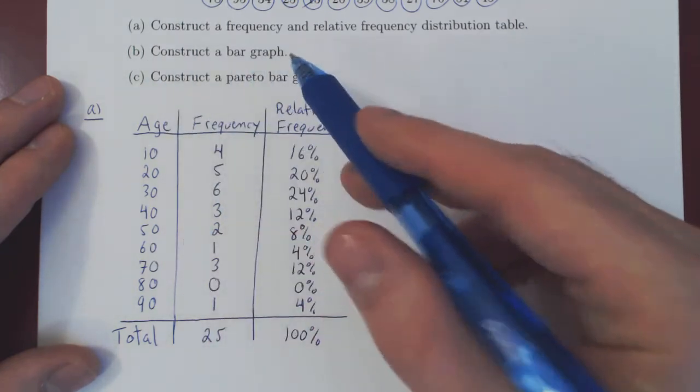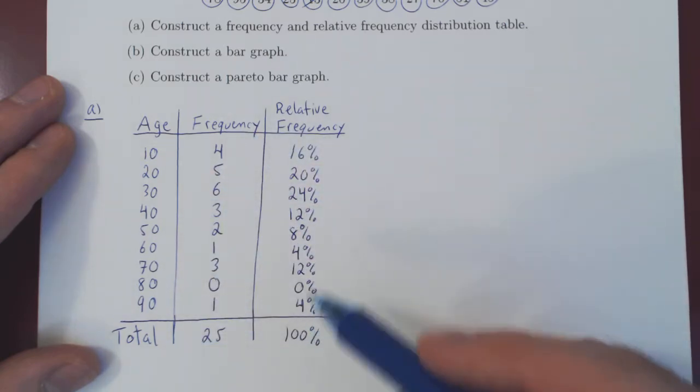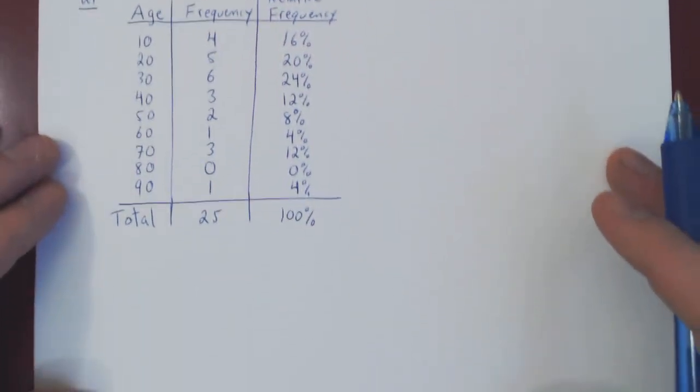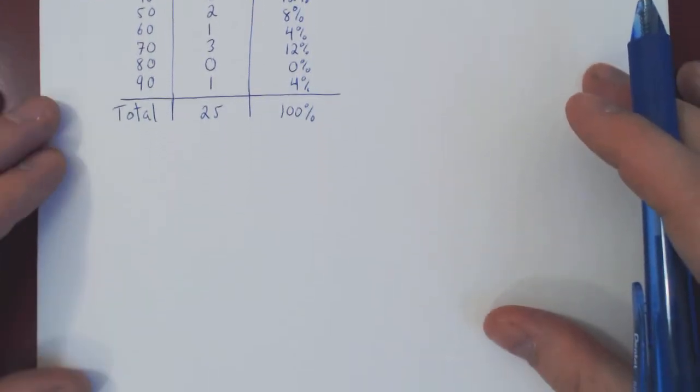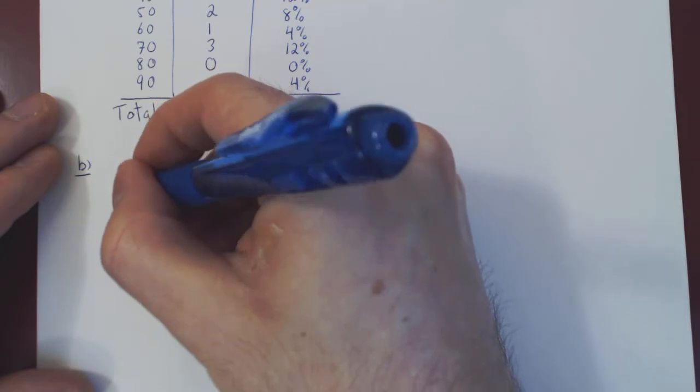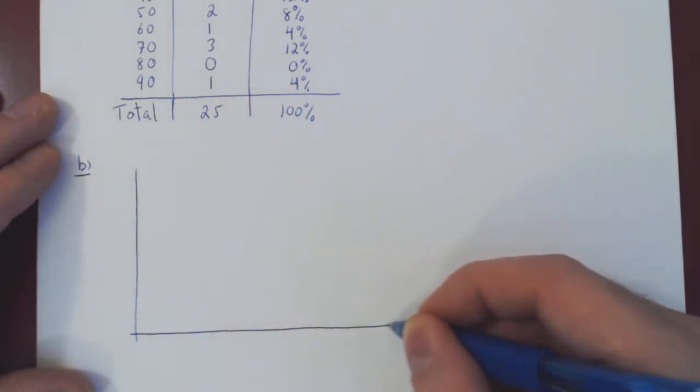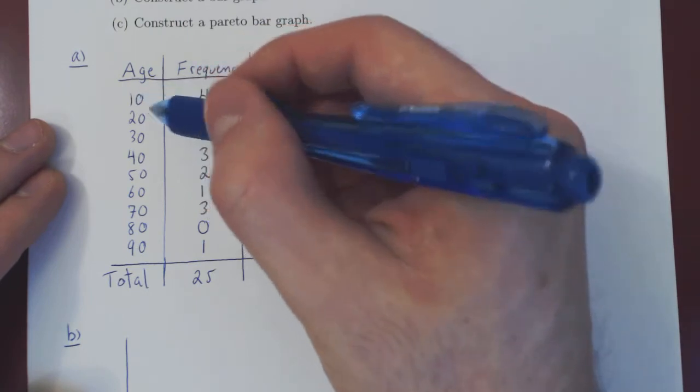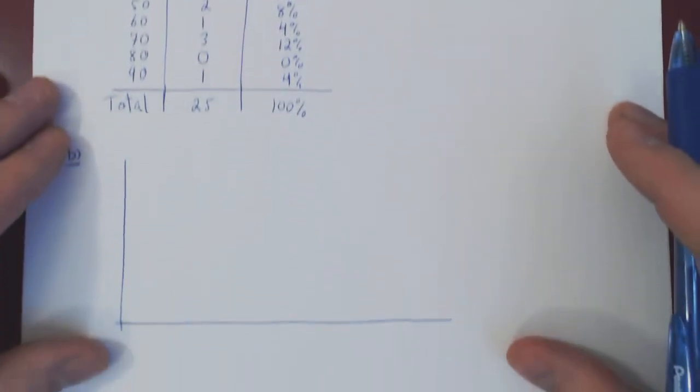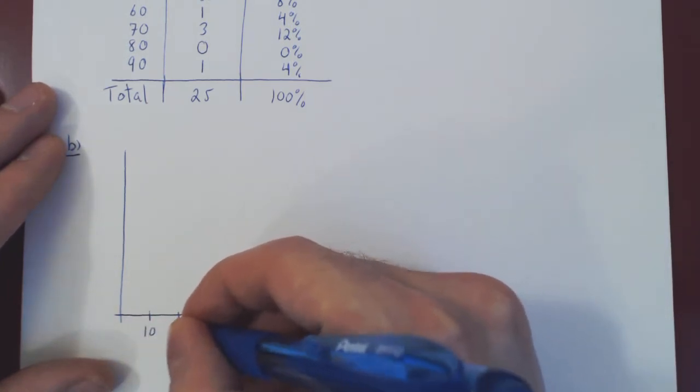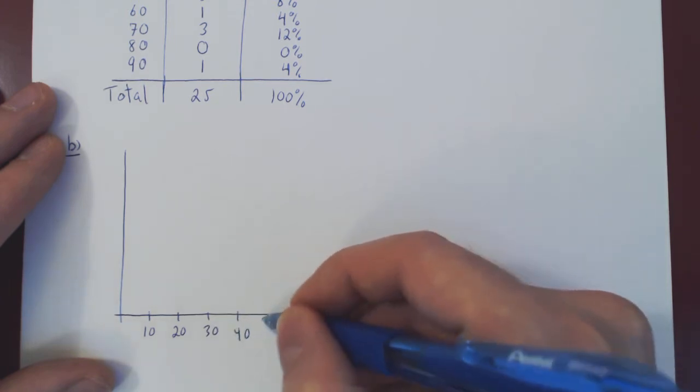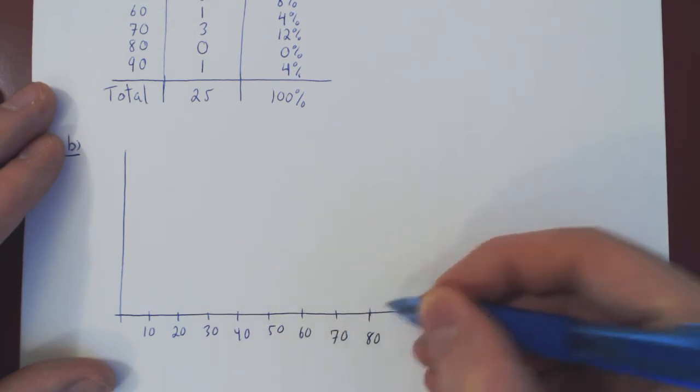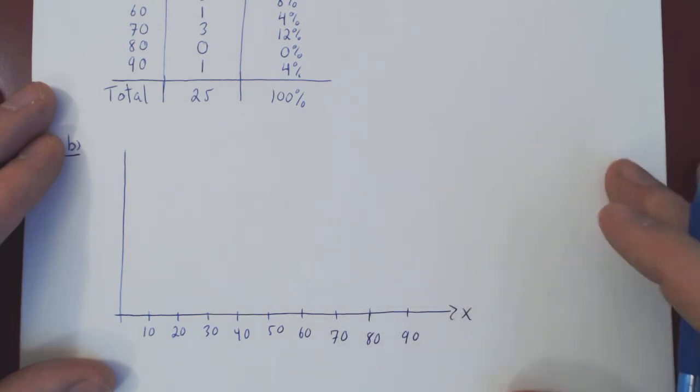Now from this, we can easily construct a bar graph. And all a bar graph is, is a graphical representation of our frequency or relative frequency distribution table. So a bar graph, well, we have two axes. So this will be B. Along our x-axis, we will have our categories. So here we have our bins, right? Age groups, so people in their teens, twenties, up to nineties. So people in their teens, twenties, all the way up to 90.